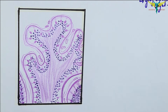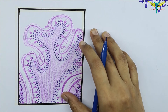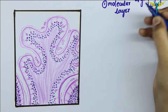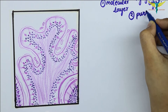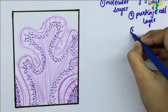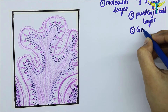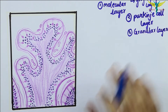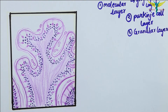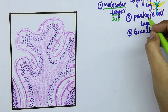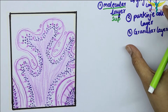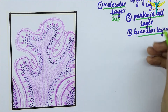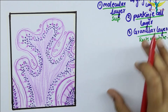The cerebellar cortex has a uniform structure in all parts of the cerebellum and it is divided into three layers: the molecular layer, the Purkinje layer, and the granular layer. The molecular layer is the most superficial layer of the cerebellar cortex, the Purkinje cell layer contains the Purkinje cells, and the granular layer rests on the white matter below.